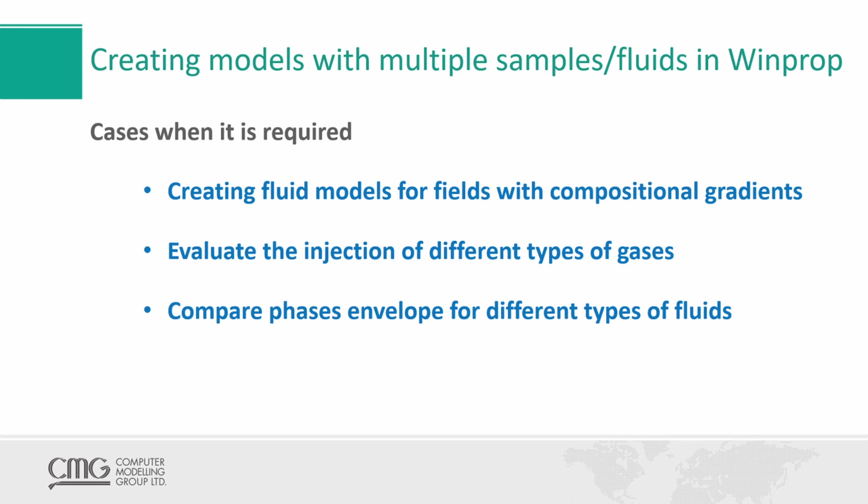There are three cases that we will be covering here related to using multiple samples. The first one will be creating fluid fields with compositional gradients — there will be three different samples, each having a set of PVT data. Second, we will evaluate the injection of different types of gases, specifically the swelling test with CO2 and nitrogen. And finally, we will do a third exercise related to comparing phase envelopes for different types of fluids.